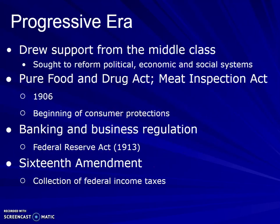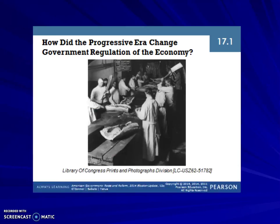When we look at the Progressive Era, they drew support from the middle class, and they sought to reform political, economic, and social systems. So you had the Pure Food and Drug Act, Meat Inspection Act — think of the jungle. We had the beginning of consumer protections. You had the Federal Reserve Act in 1913, and the 16th Amendment for the collection of federal income taxes came about at the same time.